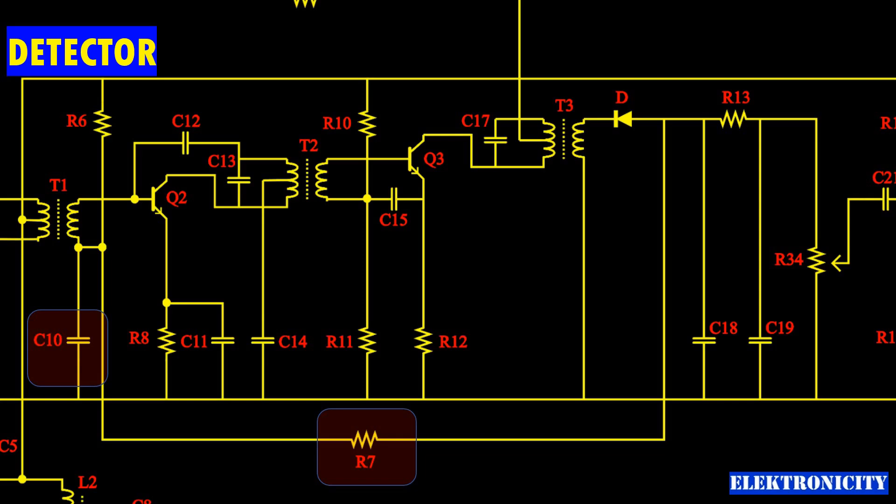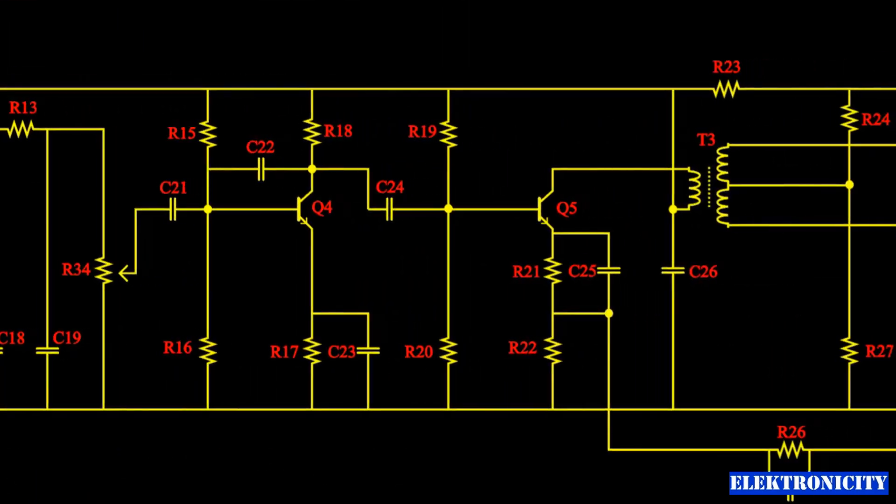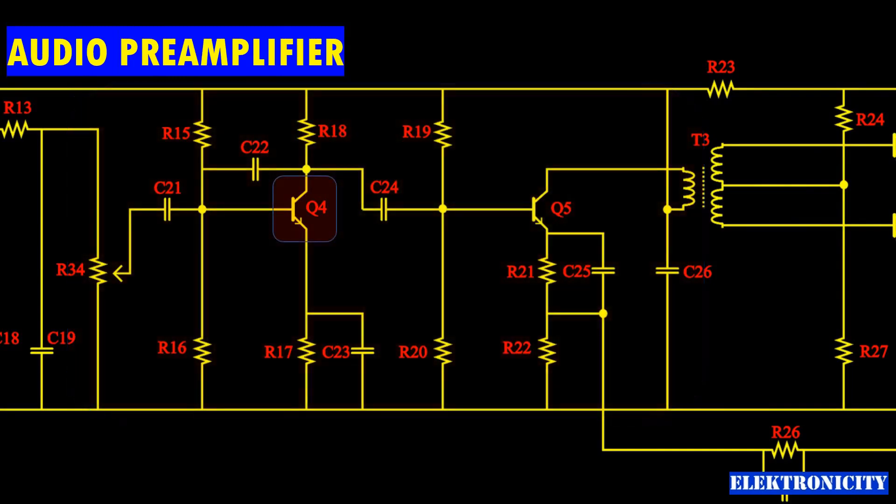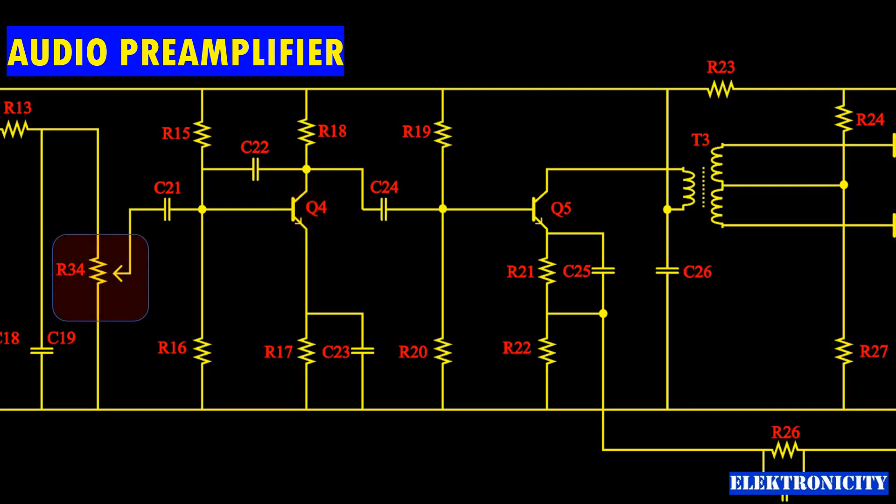R7 adjusts automatic gain control strength and forms a low-pass filter with C10. Audio pre-amplifier: Q4 acts as an audio pre-amplifier. R34 controls the volume and C22 provides a negative feedback at higher frequencies, offering additional low-pass filtering. Q5 drives the power stage.